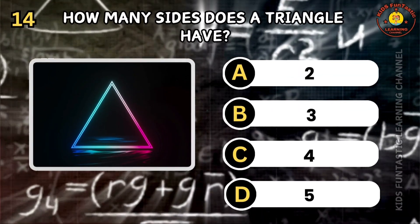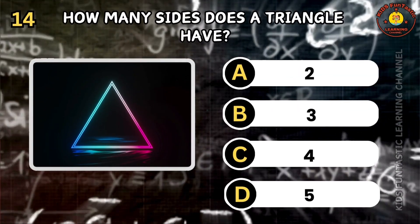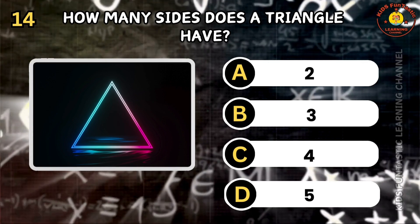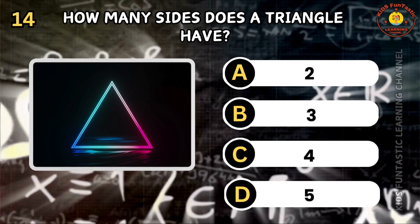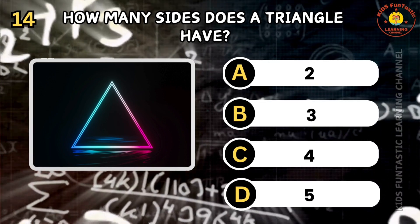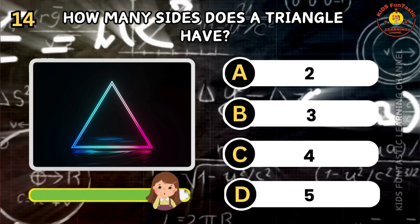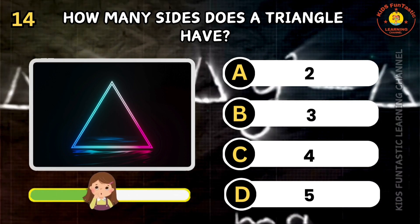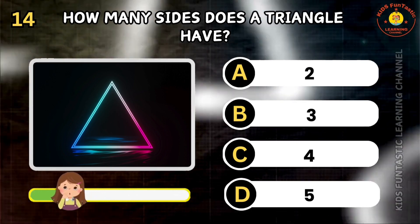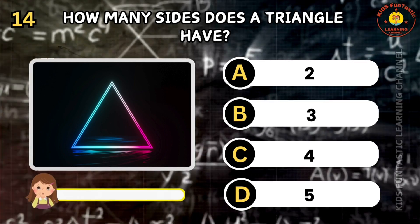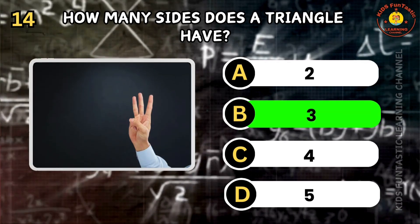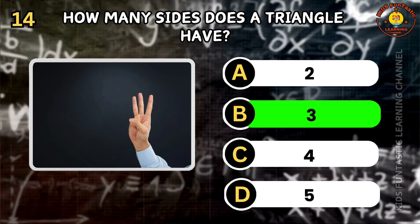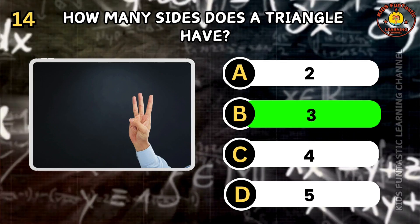Question 14. How many sides does a triangle have? A: 2, B: 3, C: 4, D: 5. You're a geometry genius! The correct answer is B. A triangle has three sides.